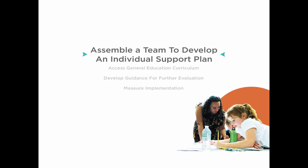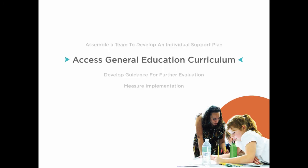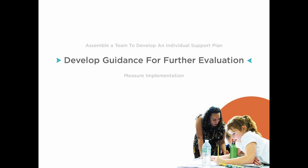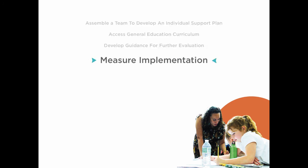Think about how often and how long we do things. Think about intentional changes to the learning environment that may be helpful for the student, and consider changes that can be made to the instructional delivery, instructional activities, or instructional materials that would help accelerate student learning. Plan individualized supports that will enable meaningful engagement, accessibility, and progress in the general education curriculum. Develop guidance to assist teams in understanding when to consider further evaluation. Use a fidelity tool for measuring implementation of individual supports.